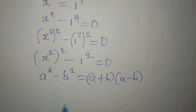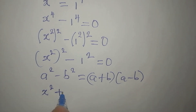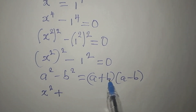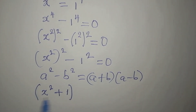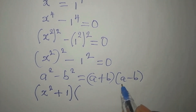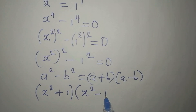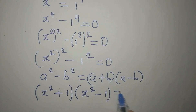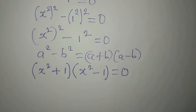Applying the difference of two squares, my 'a' is going to be x squared, so I have x squared plus 1 in the first bracket — where my 'b' is 1 — then in the second bracket we have x squared minus 1.